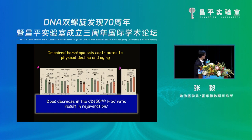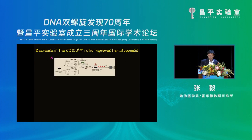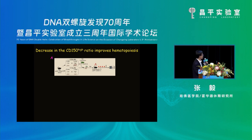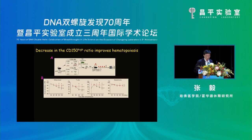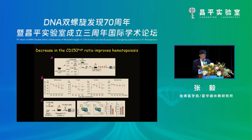The next question is: does decreasing the CD150-high ratio result in rejuvenation? We performed an experiment where from the same old mice we separated pure CD150-low and high populations and mixed them in different ratios — one-to-one versus one-to-three low-to-high. Comparing these is like removing some of the bad CD150-high population. The one-to-one ratio was better in terms of contributing to T cells and B cells, and in the differentiation assay the one-to-one ratio again showed more cells progressing to common progenitor cells.